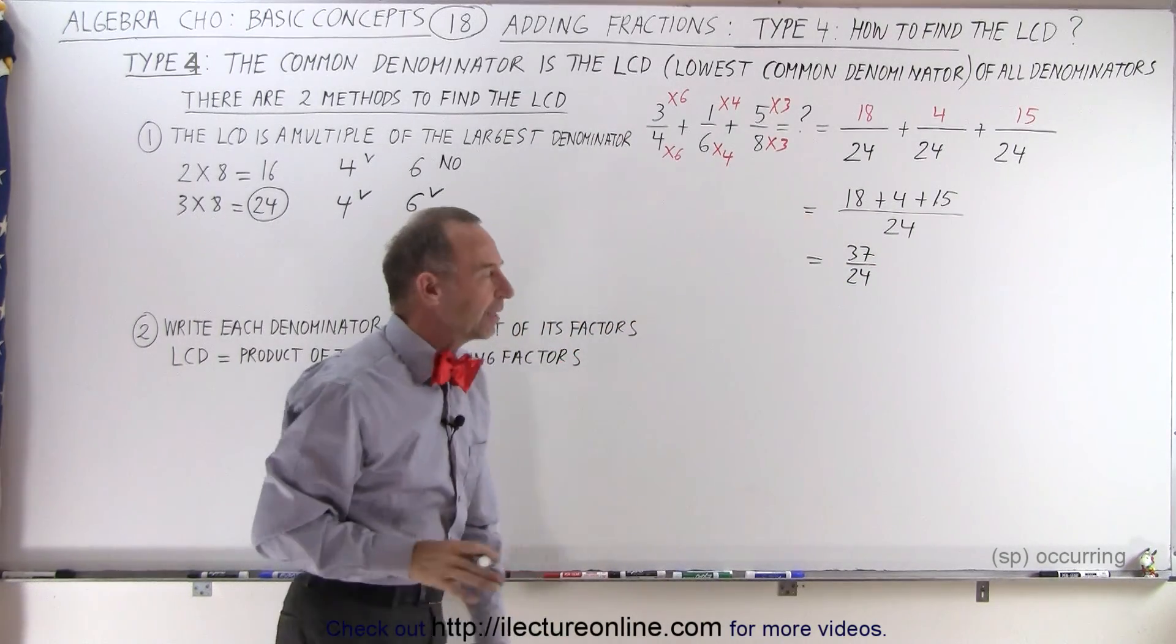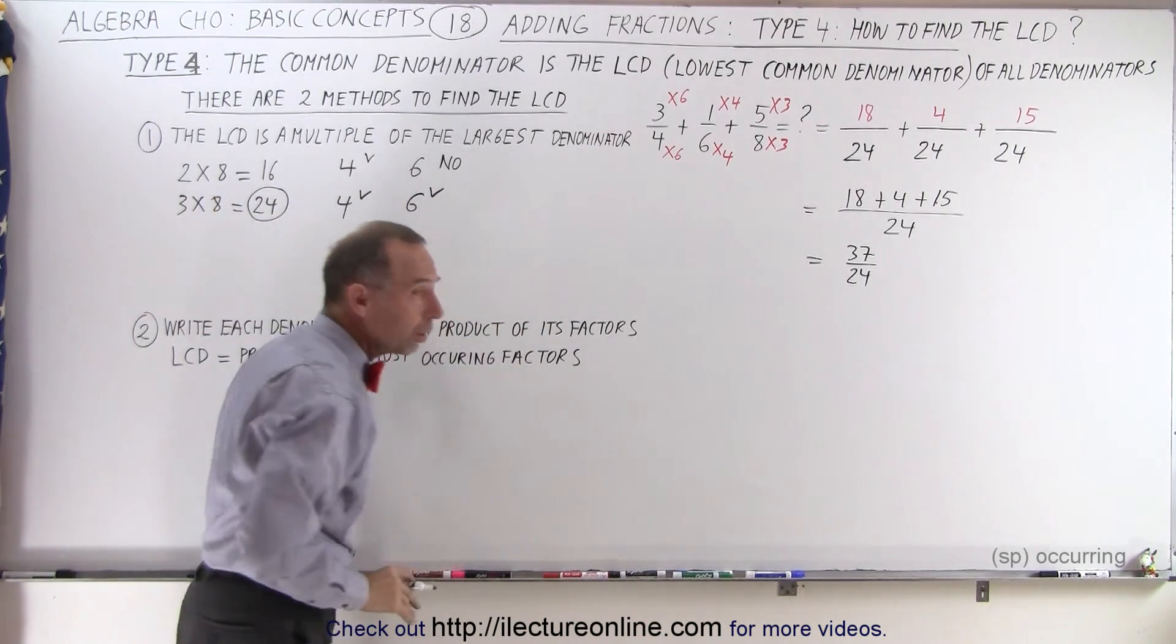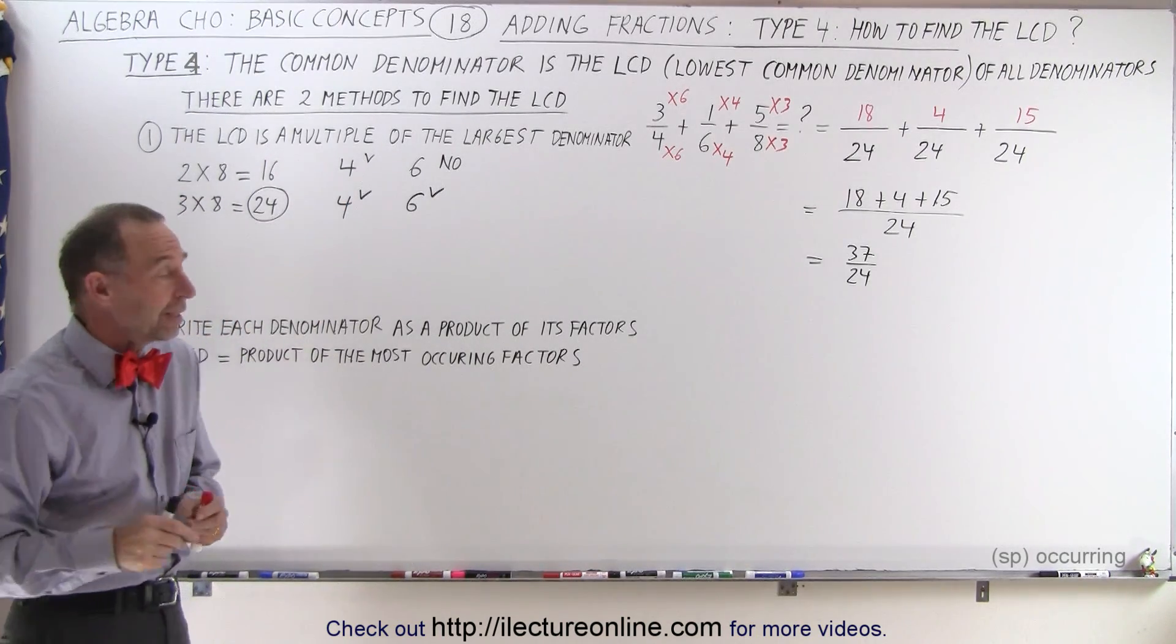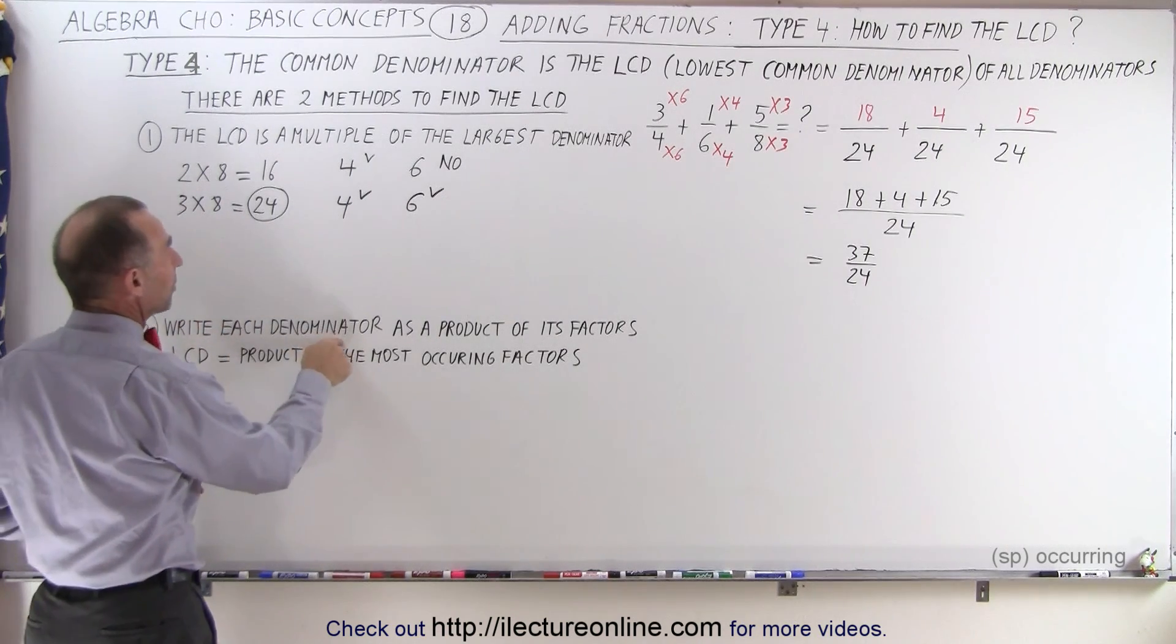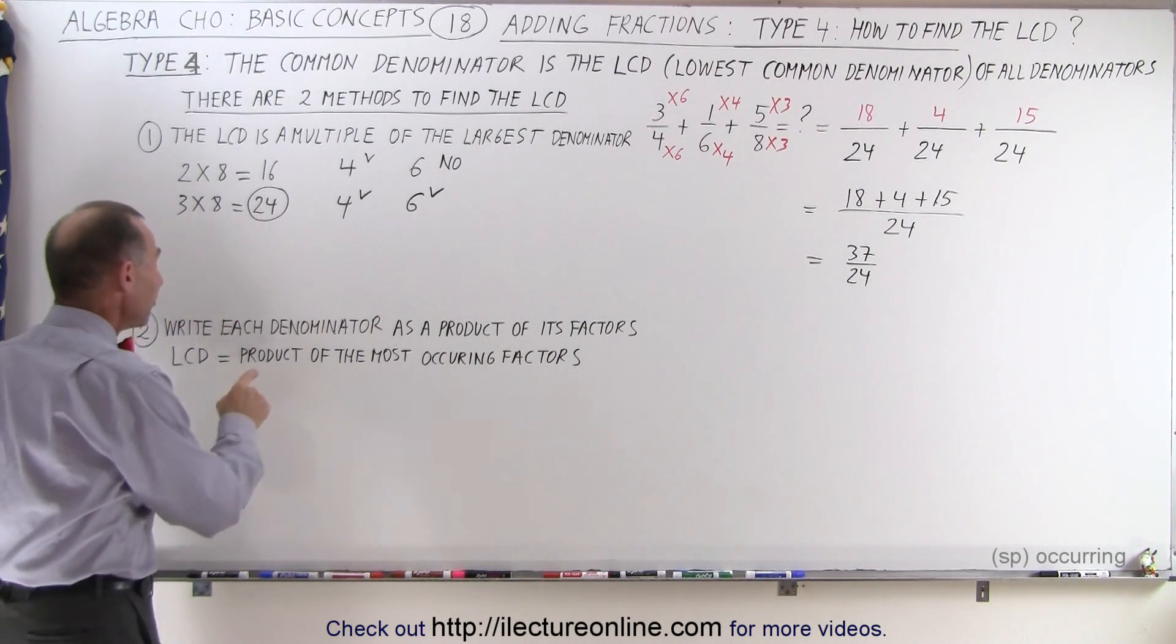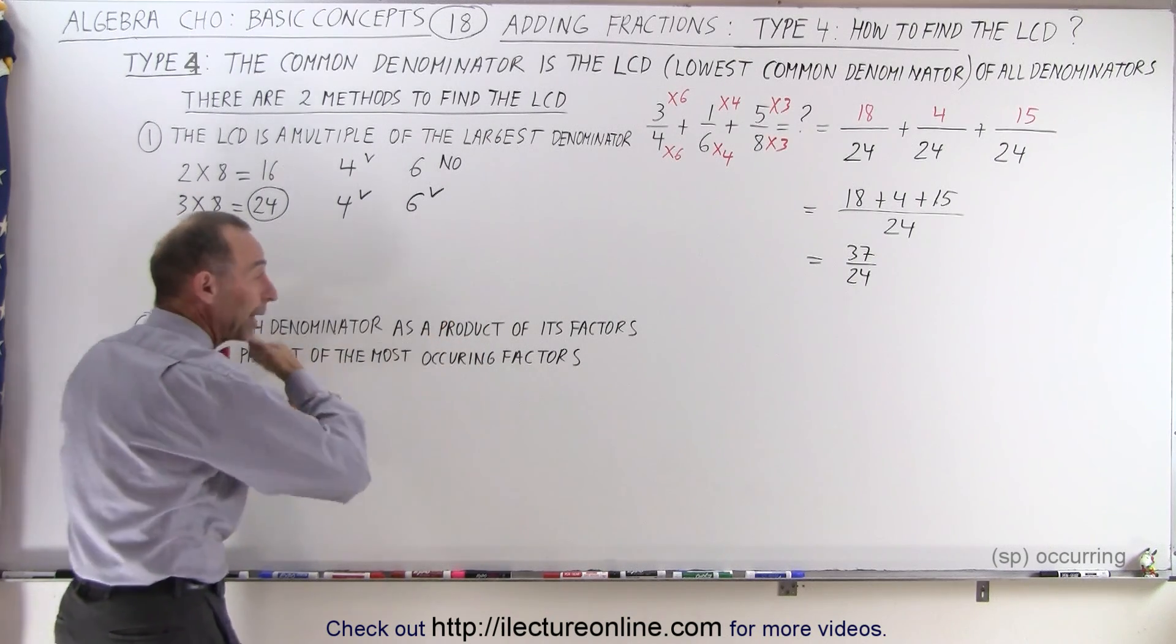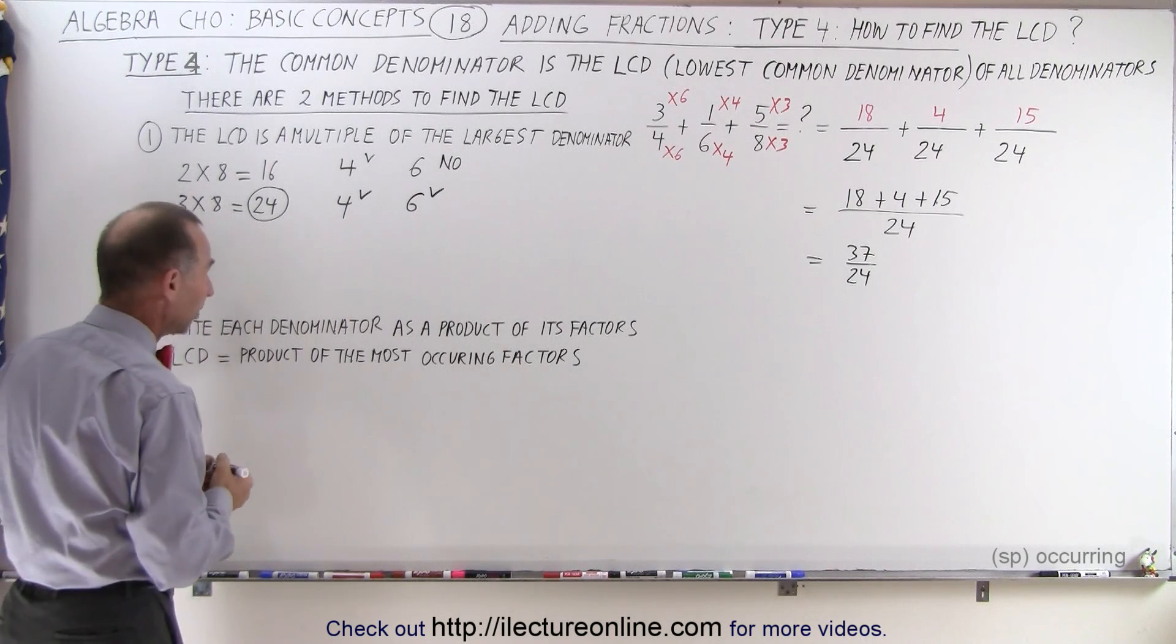But what about the second method? So this is a good method. It works quite quickly when the numbers are small. But when the numbers get to be big, it may be more difficult to use this method. There's another fail-safe method that works every single time. The way we do that method is we write each denominator as a product of its factors. And then we find which factor occurs the most. And wherever each factor occurs the most, we circle that and we multiply all those factors together, which then forms the LCD.